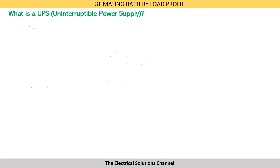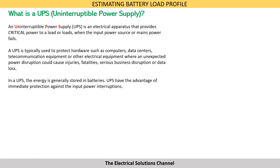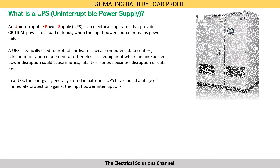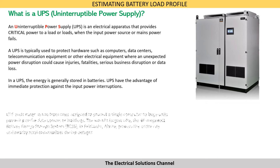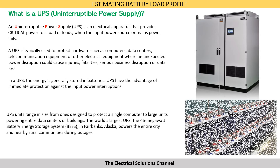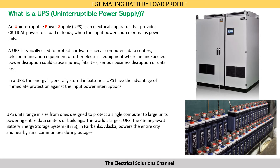A UPS, or uninterruptible power supply, is an electrical apparatus that provides critical power to a load when the input power source or mains power fails. A UPS is typically used to protect hardware such as computers, data centers, telecommunication equipment, or other electrical equipment where an unexpected power disruption could cause injuries, fatalities, serious business disruption, or data loss. In a UPS, energy is generally stored in batteries.